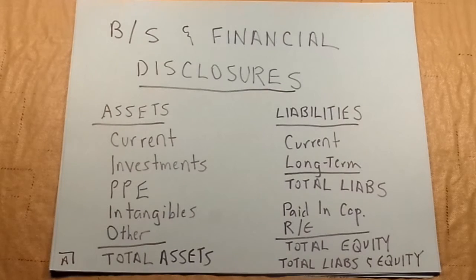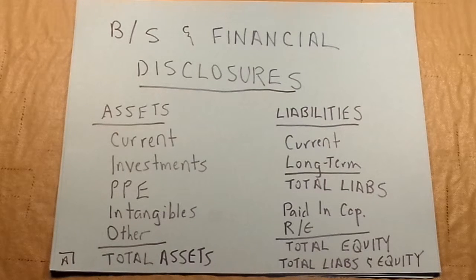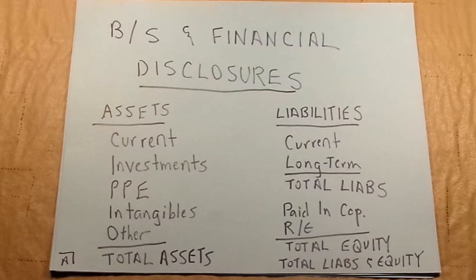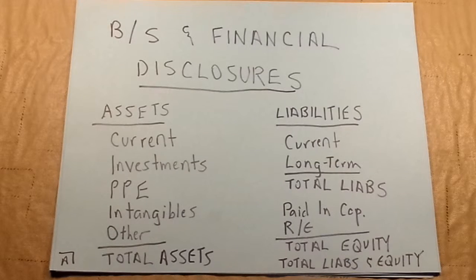In intermediate accounting, we're ready to look in more detail at some of the things covered in Accounting 211 and 212. First, we'll take a harder look at the classified balance sheet. The classified balance sheet has current assets listed first, then investments, property/plant/equipment, intangibles, and other assets — all adding up to total assets. On the liabilities and equity side, we have current liabilities and long-term liabilities making up total liabilities, and paid-in capital plus retained earnings adding up to total equity.